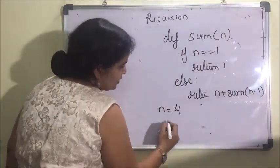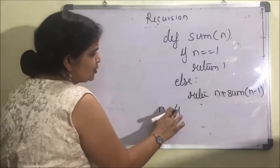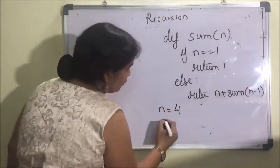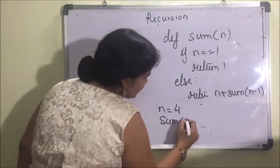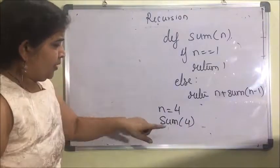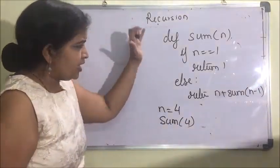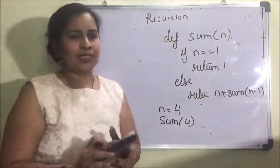Better to take input from the user. I have written n equals 4, then I have called this function. Now, in each and every recursion there are two cases.